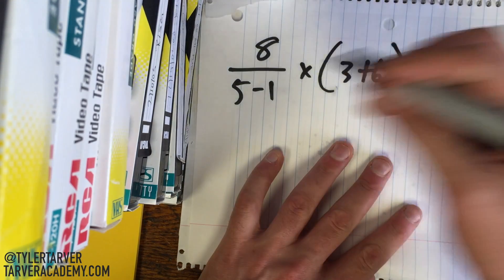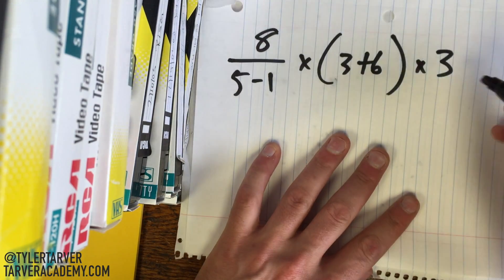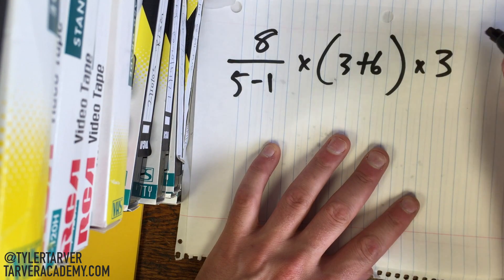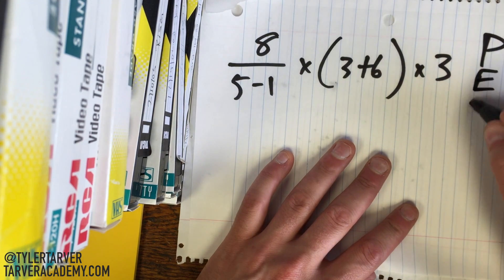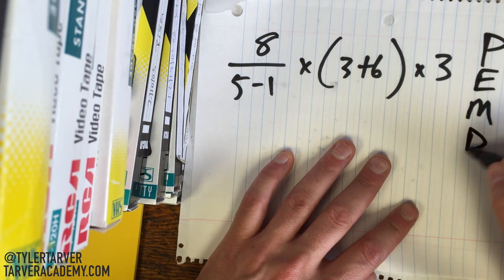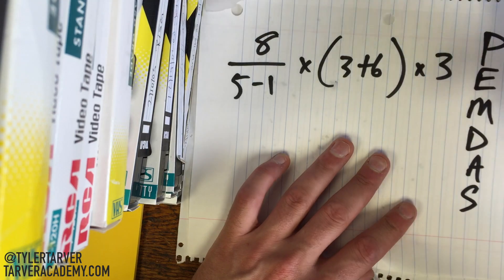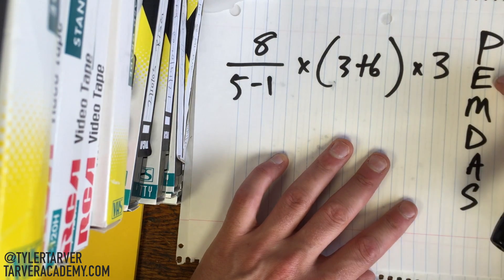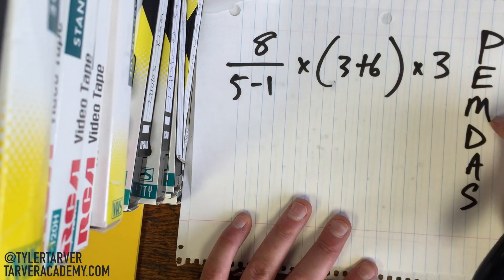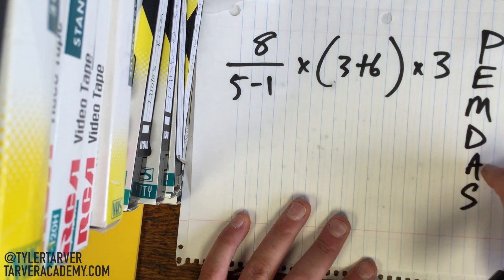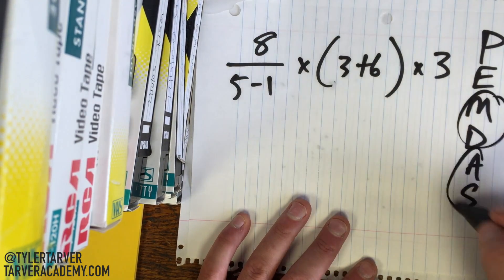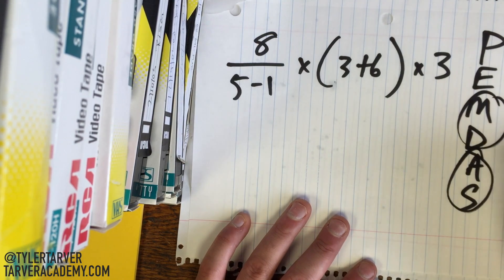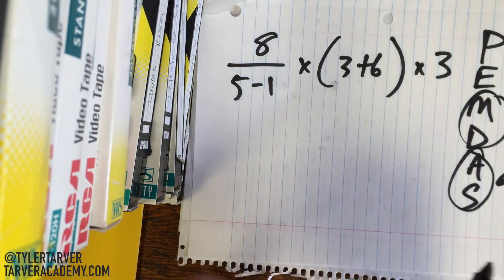And we're back. So let's remember our order of operations. We've got 'please excuse my dear Aunt Sally,' which is parentheses, exponents, multiply, divide, addition, subtraction. Now these two are grouped together — you're really just going from left to right with those.